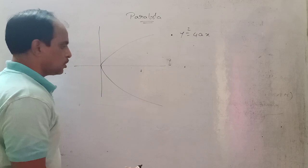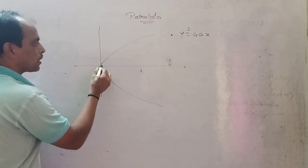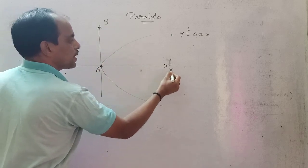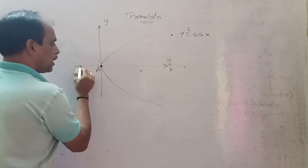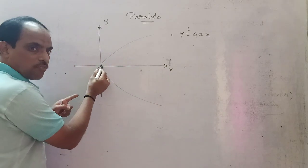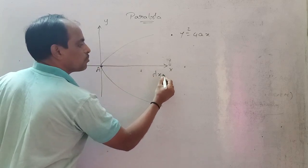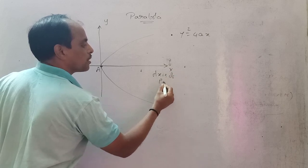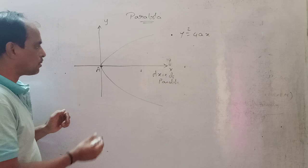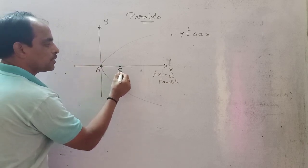This point is called the vertex of the parabola. This one is the y-axis and this one is the x-axis. The line which passes through the vertex is called the axis of parabola.